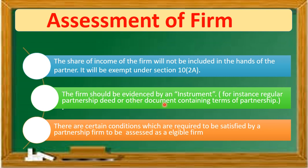The firm should be evidenced by an instrument. What is the instrument? For instance, the regular partnership deed or any other document containing the terms of partnership. There are certain conditions which are required to be satisfied by a partnership firm to be assessed as an eligible firm.